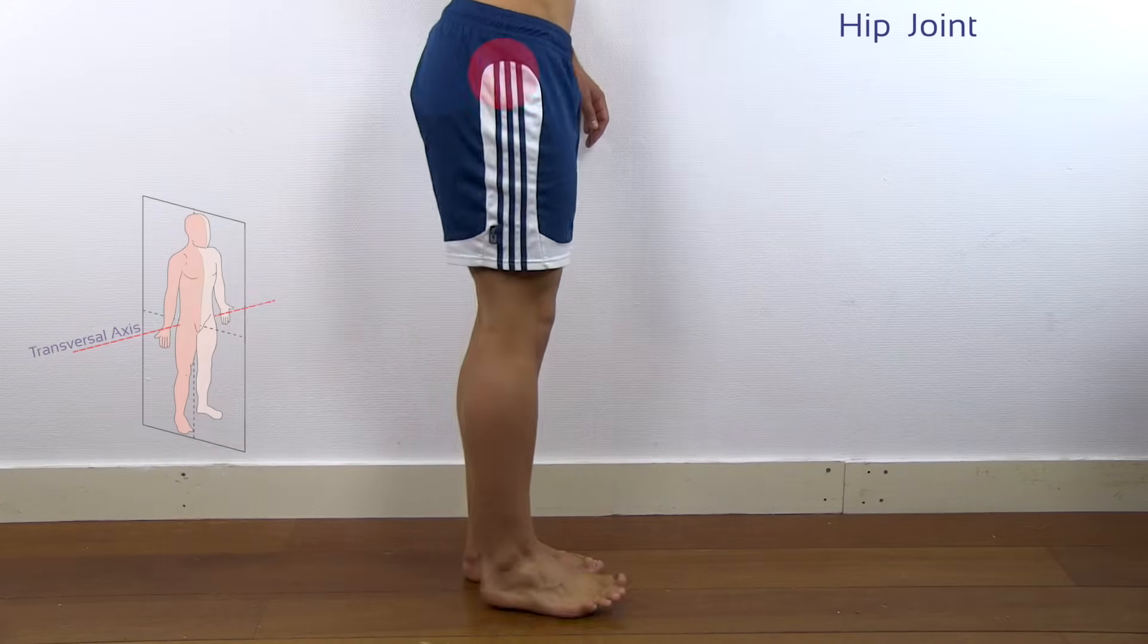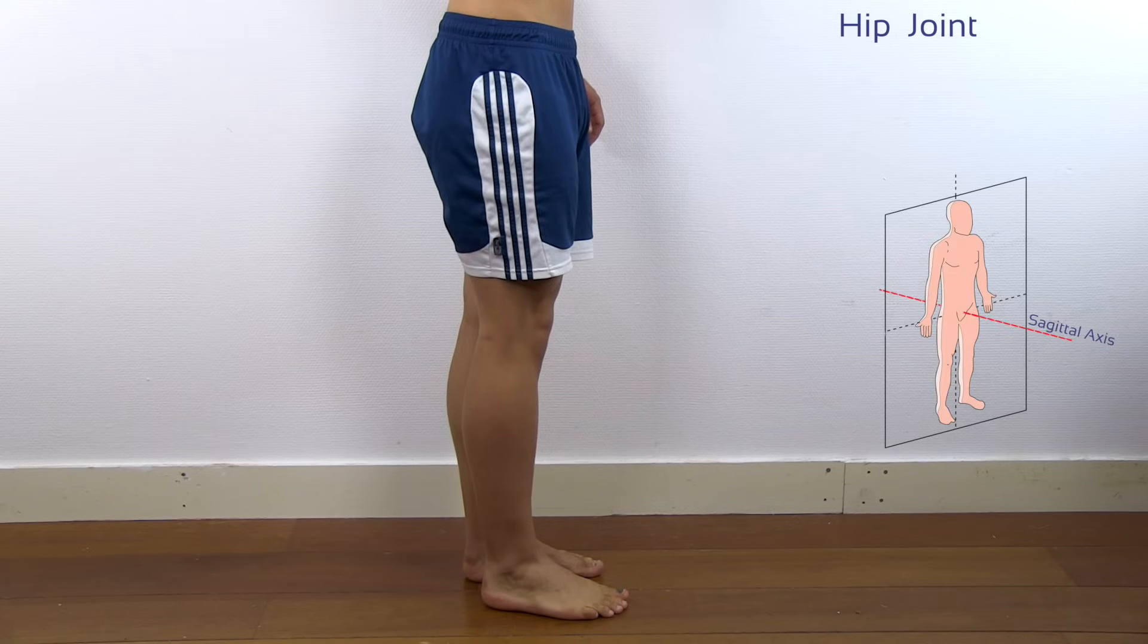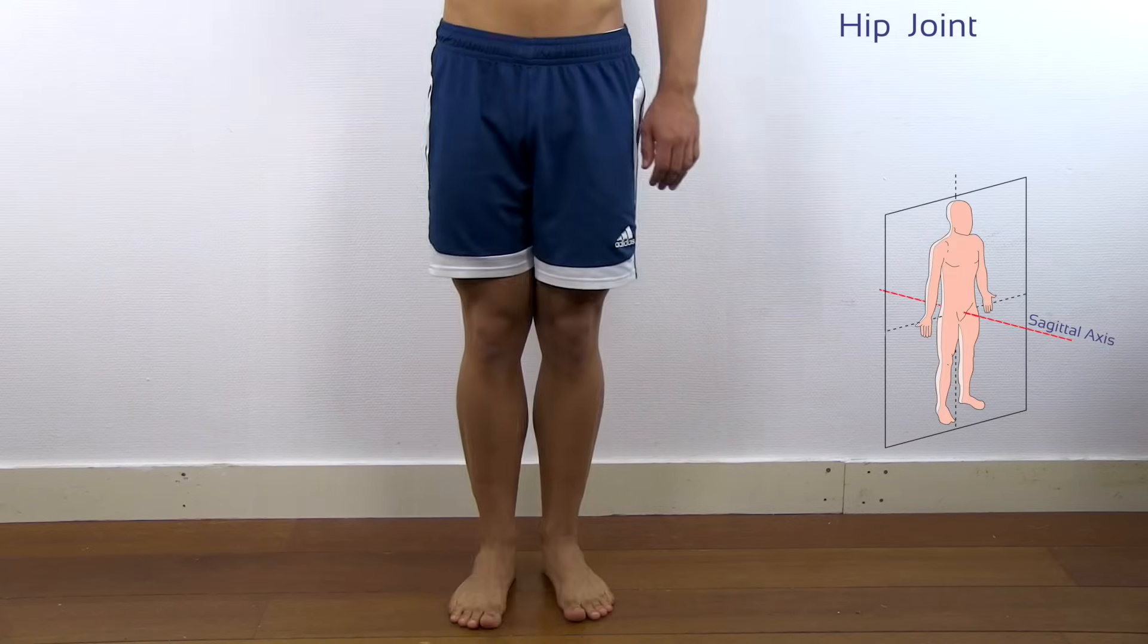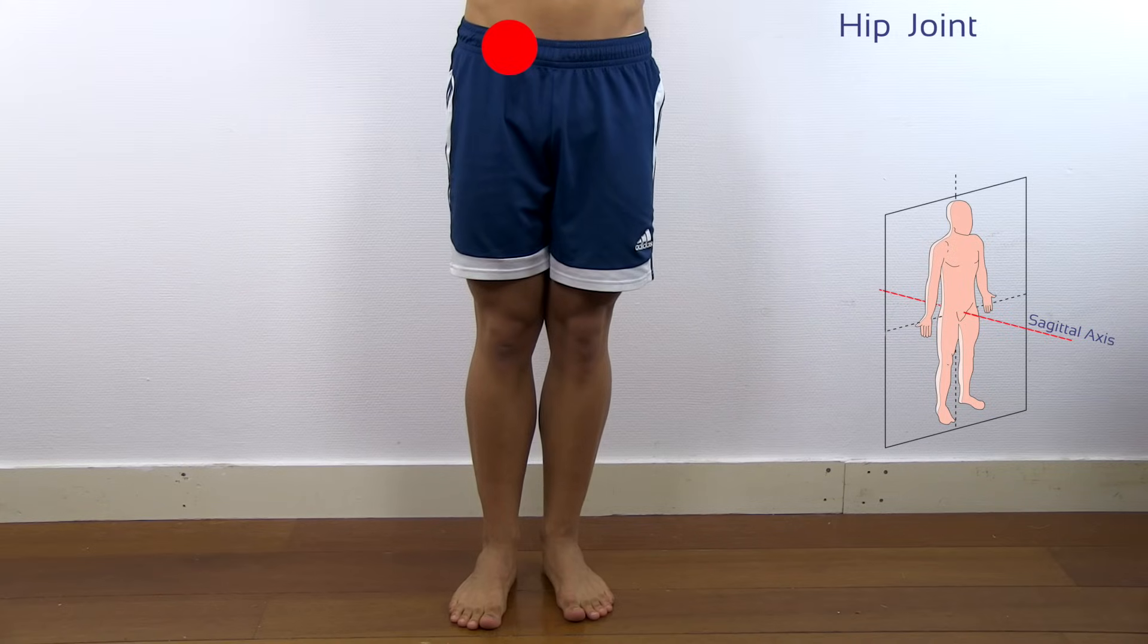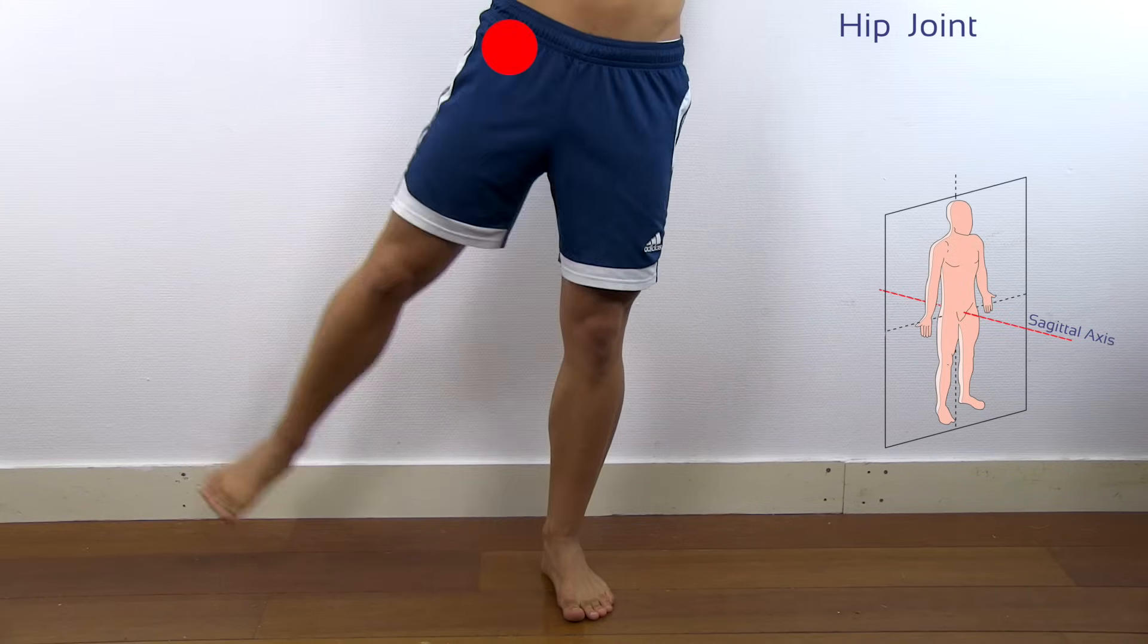If we are moving the hip in the frontal plane, we are moving around the sagittal axis. These movements are called abduction and adduction.